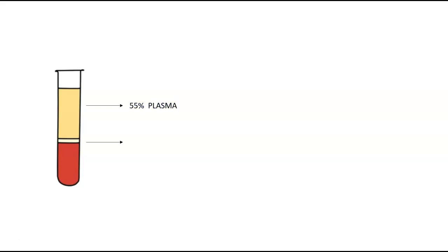The next compartment is less than 1%, and that is made up of white blood cells and platelets. Platelets are involved with blood clotting, so they make sure you don't bleed out when you have a cut. The white blood cells are very important for the immune system — they make up the neutrophils, lymphocytes, eosinophils, monocytes, and basophils.